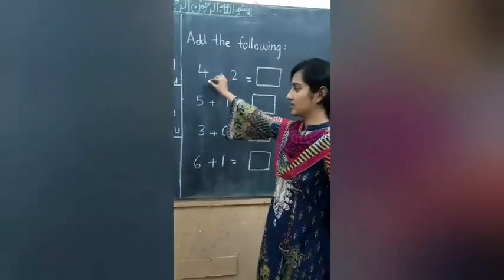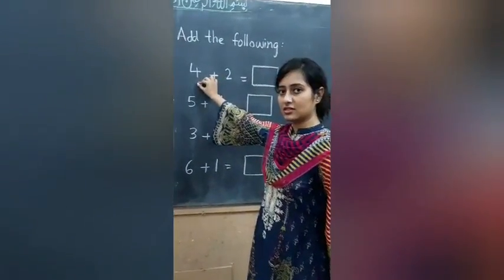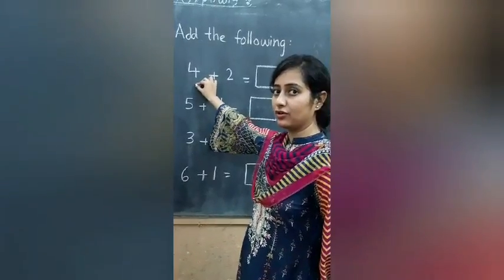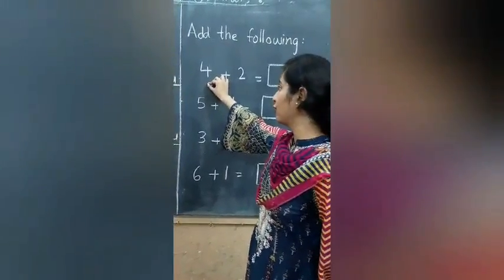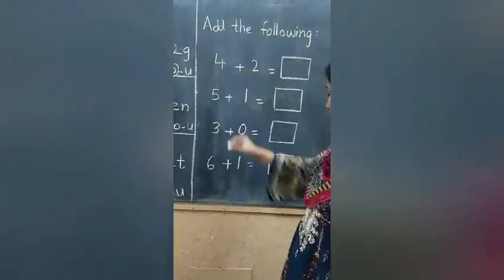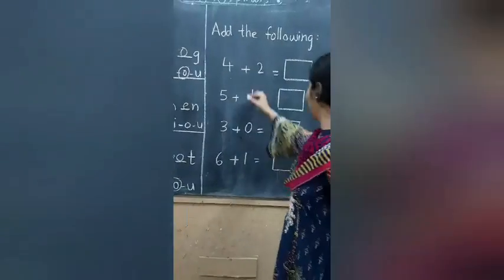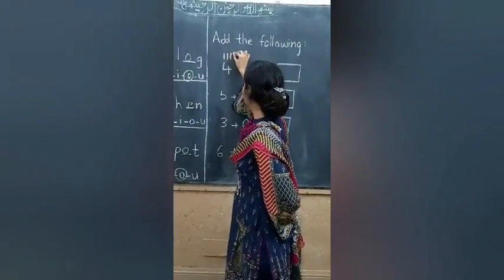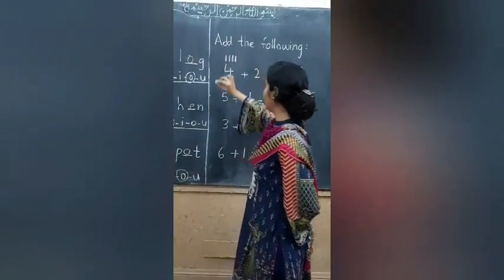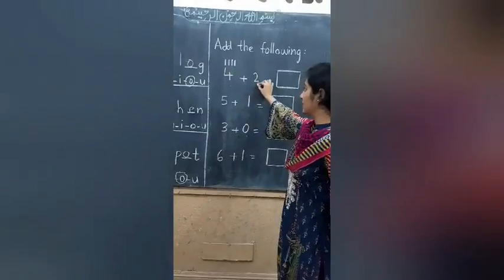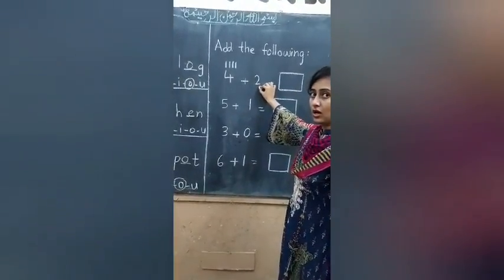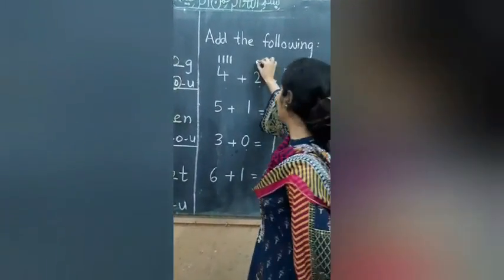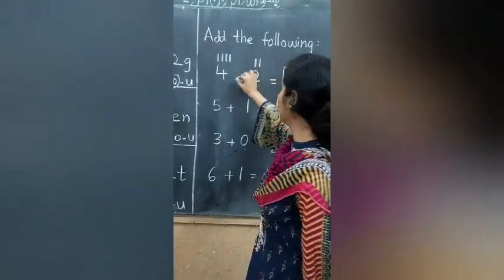Yes, which number is this? 4. How many lines will we draw? 4. 1, 2, 3, 4. Which number is this? 2. How many lines will we draw? 2. 1, 2.